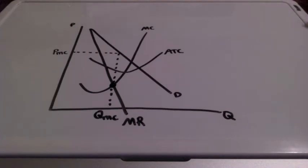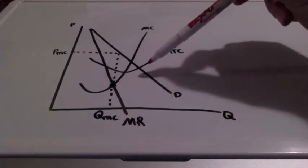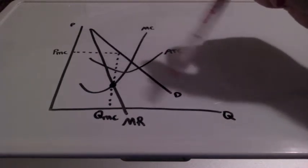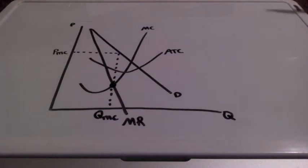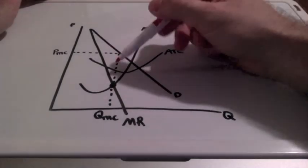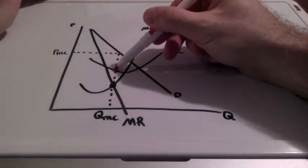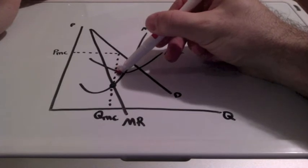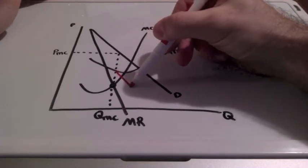Well, new firms are attracted into the industry because of low barriers to entry. And as new firms enter the market, the demand for the existing firm's product becomes more elastic. And the demand curve will shift to the left. And it's going to shift to where it hits this point here on average total cost.